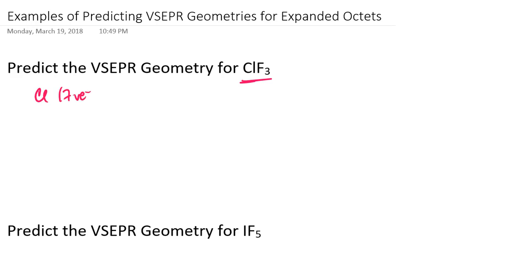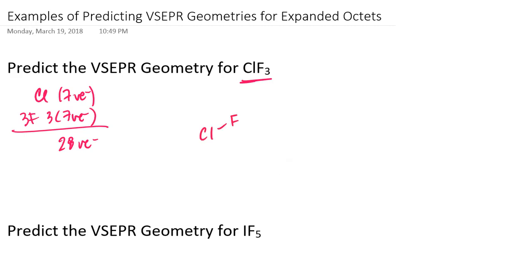Chlorine has seven valence electrons. There are three fluorines, and each fluorine also has seven valence electrons. So that would be 21 plus seven, which is 28 valence electrons. If I go ahead and draw out the Lewis structure, I'll attach the fluorines to the chlorine. That's six electrons used so far, and I need to distribute 22 more valence electrons.